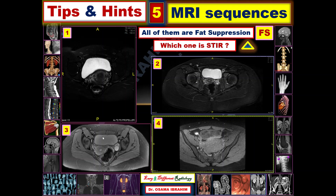If you look closely at all the images, you can check the urinary bladder first, which represents water. In T2 sequence, water appears bright. In this image it is also slightly bright, however in this image only the water appears dark. T1-weighted image is the sequence where water shows dark or low signal. Subcutaneous fat also appears dark, so this is a T1 fat suppression sequence.